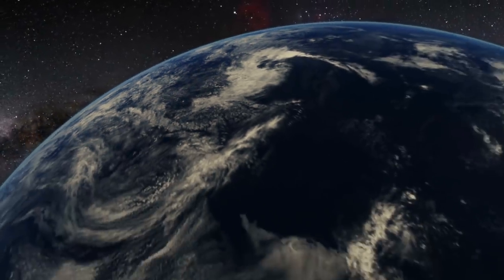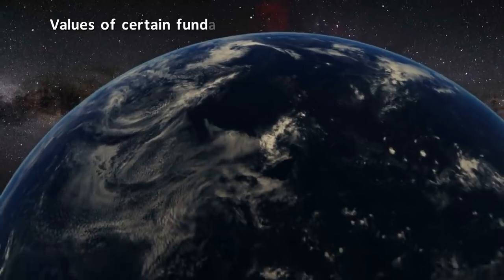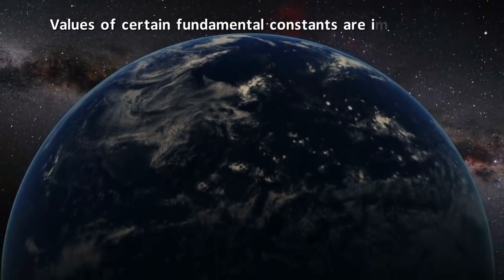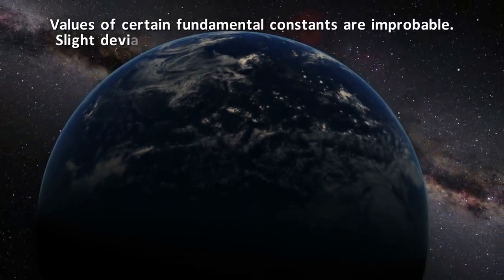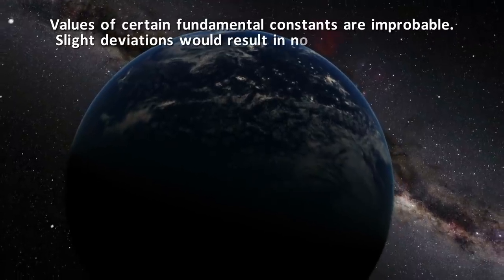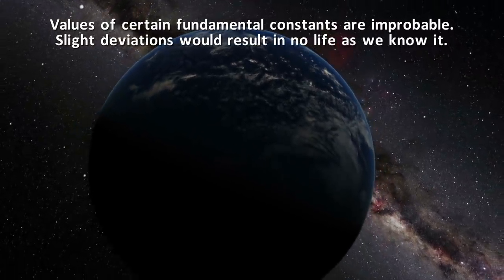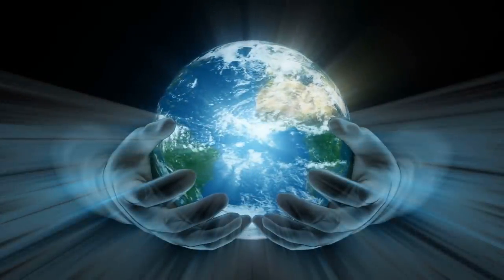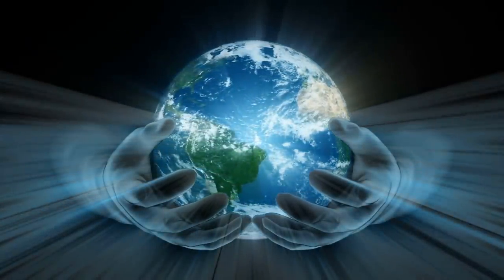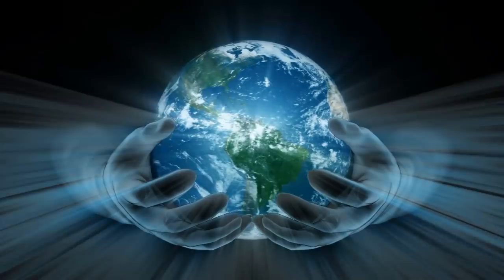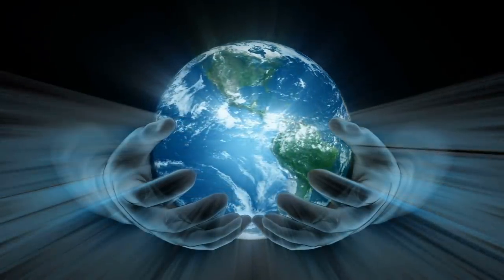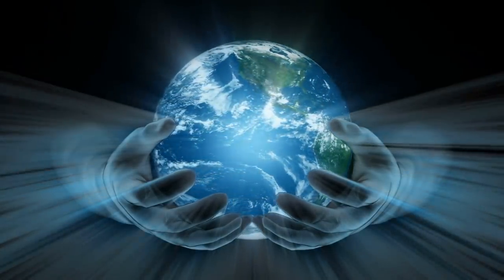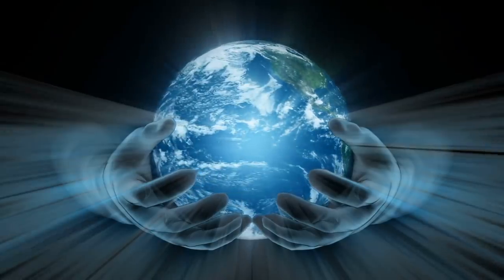It goes something like this. The constants of nature are statistically improbable. These constants are on a razor's edge such that even a slight deviation would likely result in no life as we know it in the universe. Some take the argument further and say that this fine-tuning is so unlikely that it could not have occurred by pure chance.